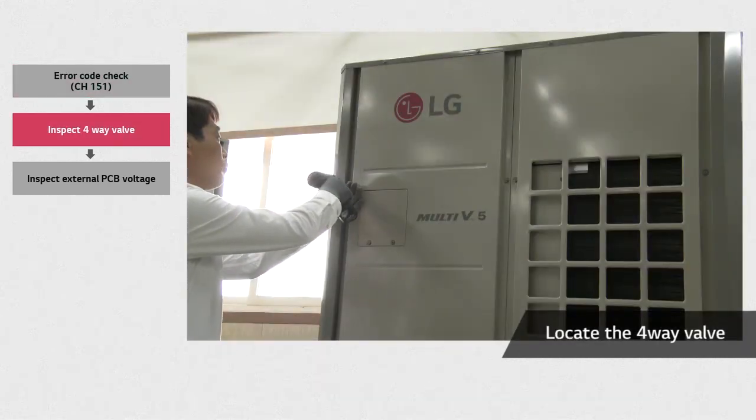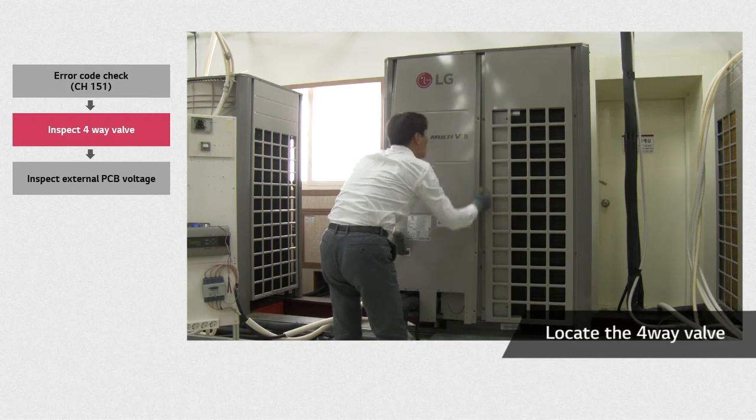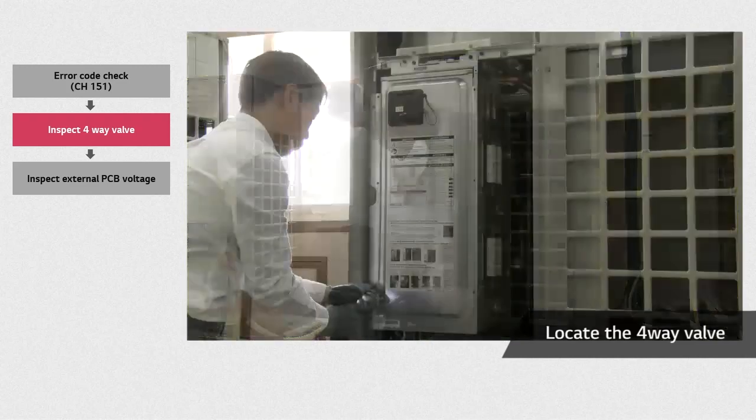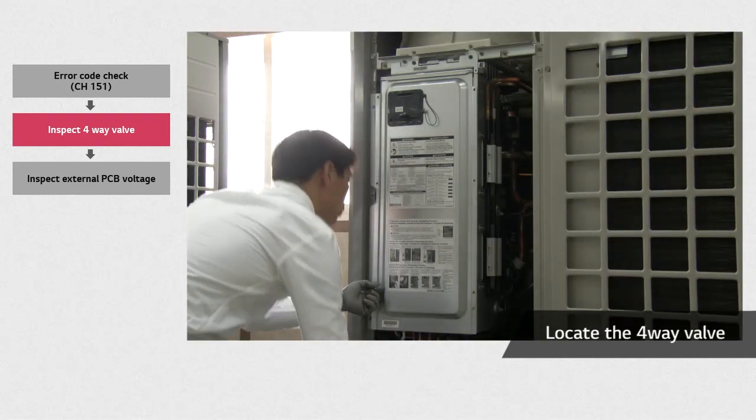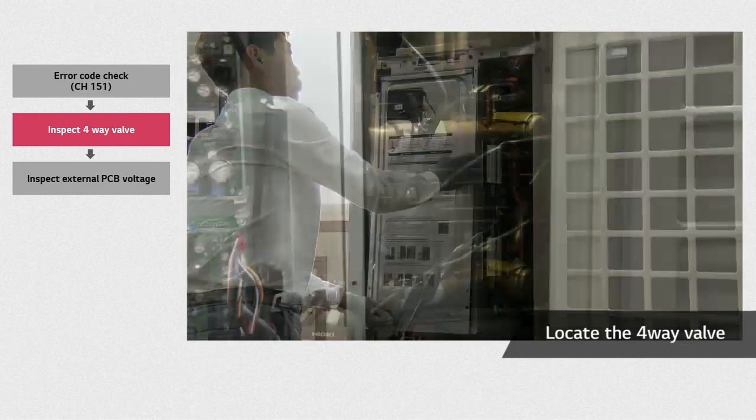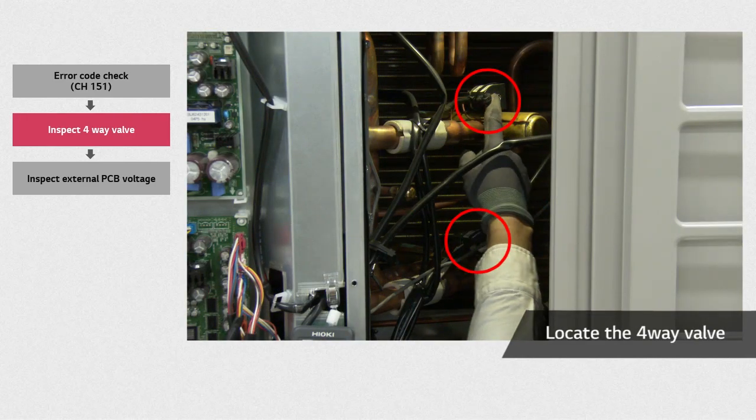To solve this problem, start by removing the panel on the front of the outdoor unit. Disassemble the control box cover of the outdoor unit. Check the location of the 4-way valve.